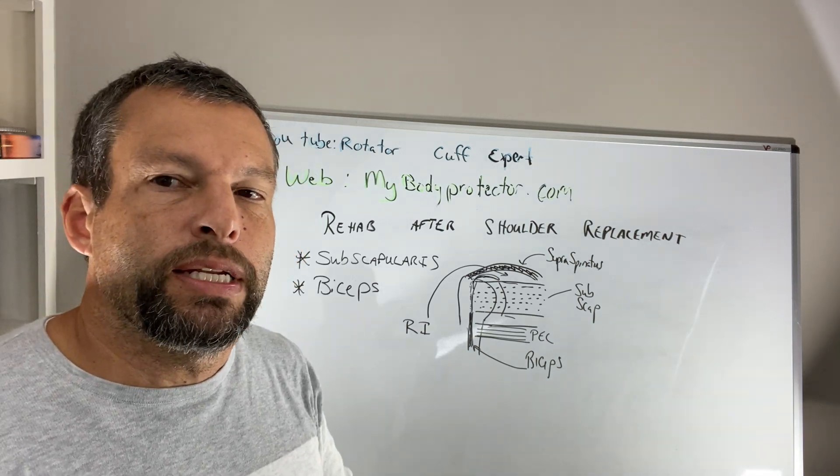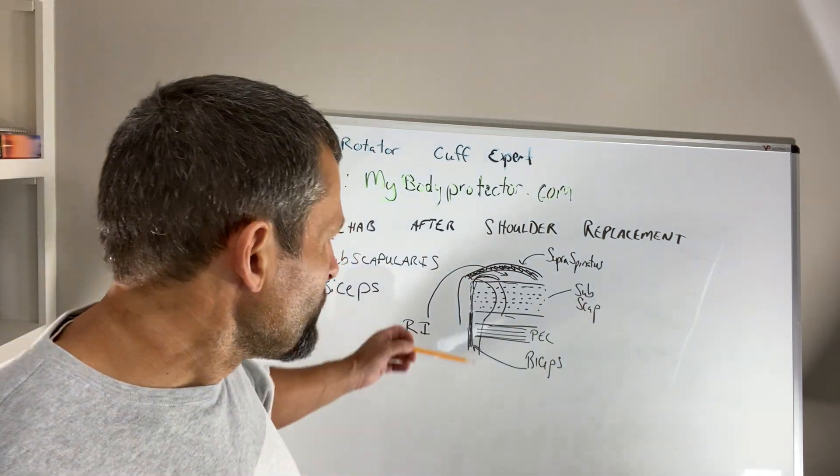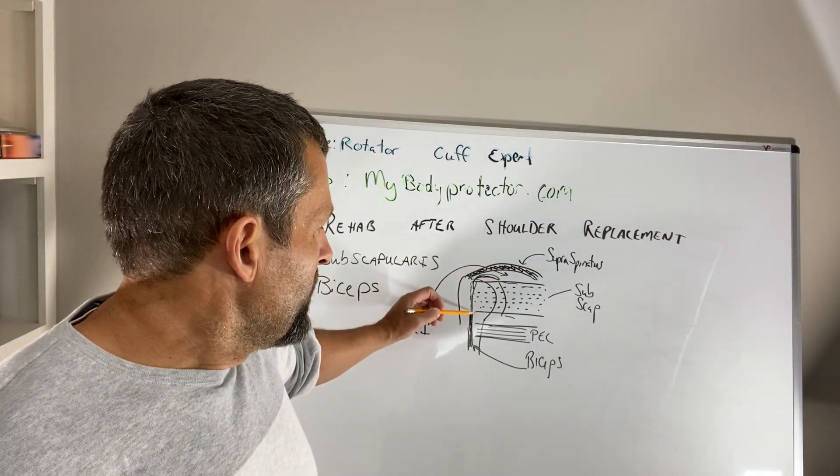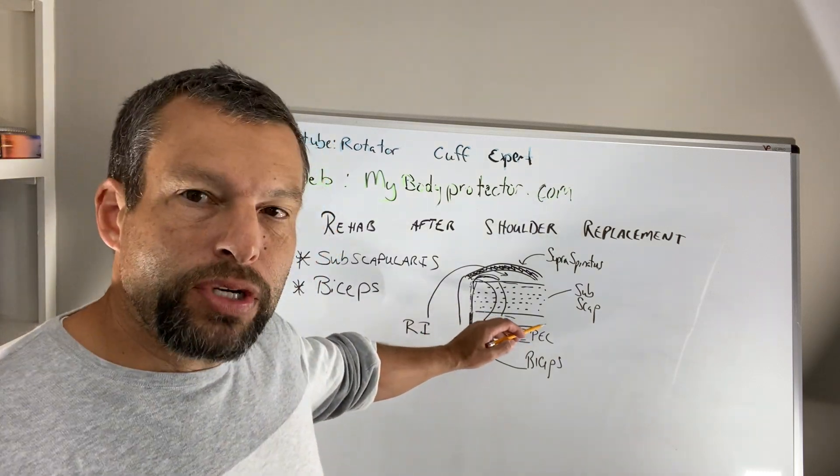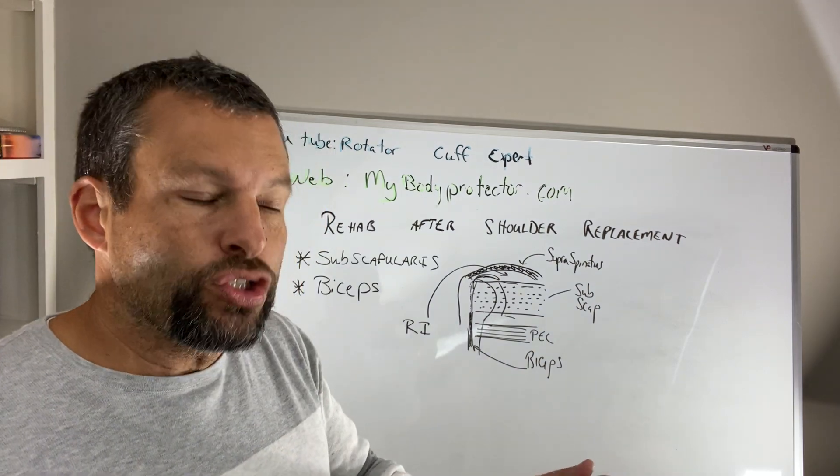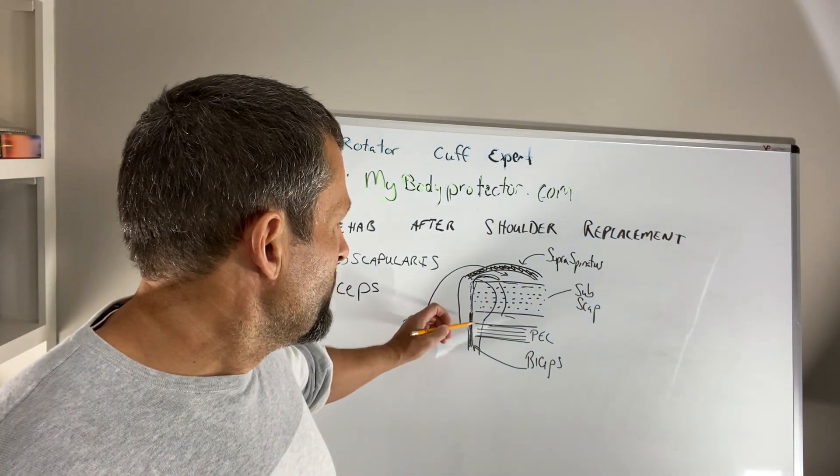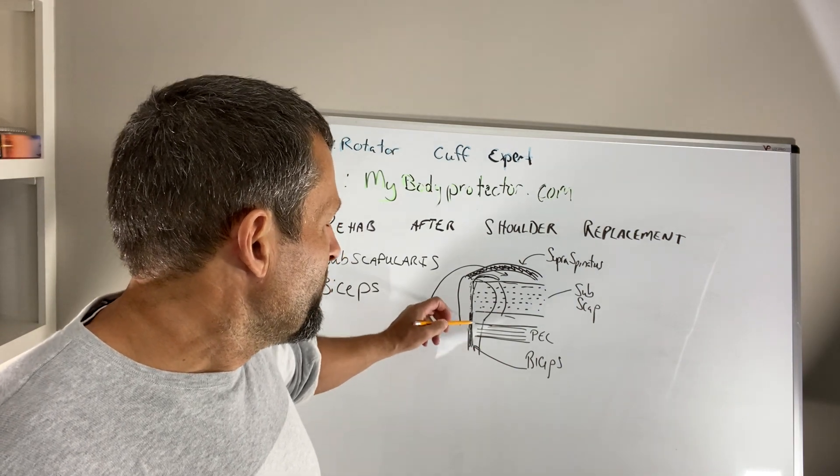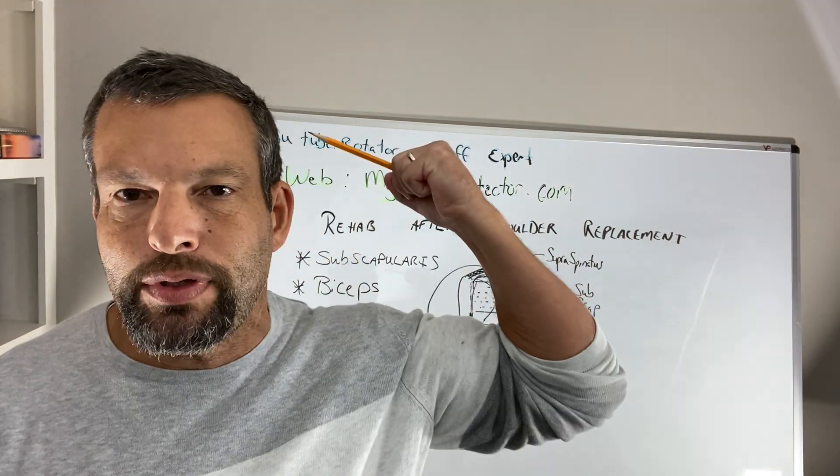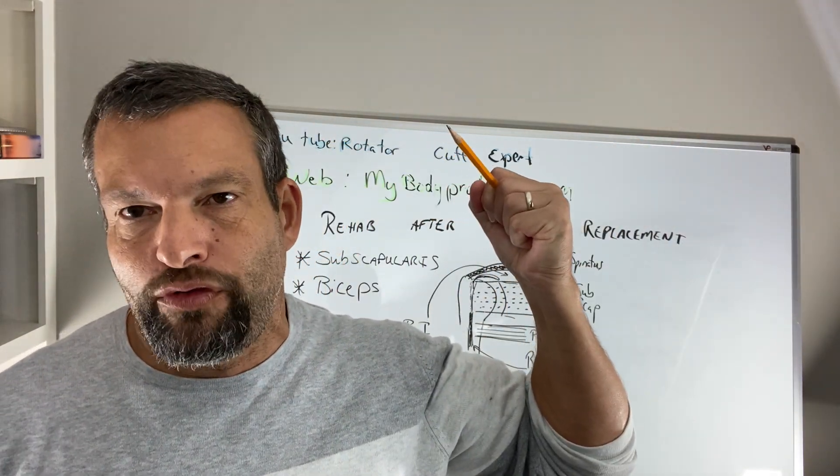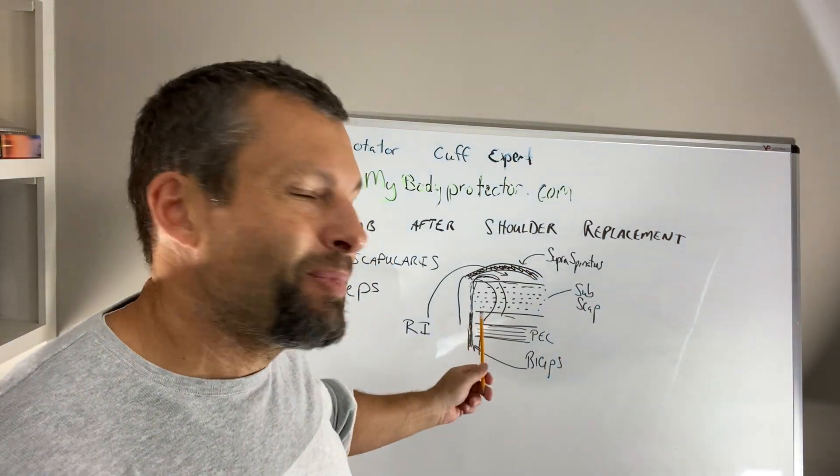Now, most of us, when we do a biceps tenodesis in the setting of a shoulder replacement, we actually release the biceps here and we release it here and we tie it to the pectoralis major. So the pec major comes across and the pectoralis major also is an internal rotator of the arm. So we'll repair it here. So when we repair the biceps, we may actually have some restrictions as far as how much you can use your biceps, right? We want to protect that bicep. We want to protect that repair, the biceps tenodesis here.